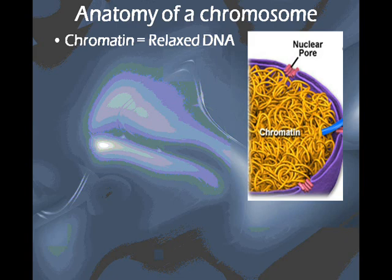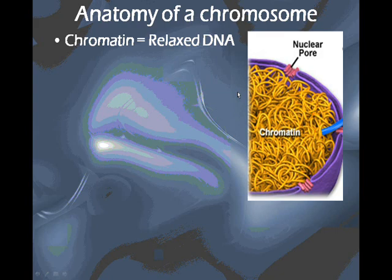Chromatin is the form DNA is in during interphase. It is in its relaxed form — it looks very much like spaghetti, shown here. The chromatin is kind of unwound and very loosely condensed inside of the nucleus. This is how it is always seen through all of G1, S, and G2, or all of interphase, the longest stage of the cell cycle.